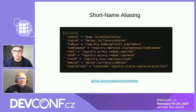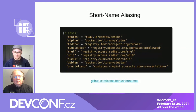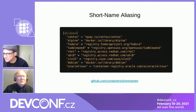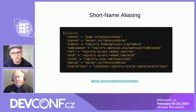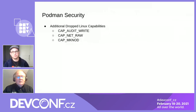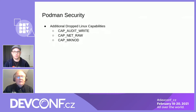We're running short on time, so I'll rush through security features. One thing Docker standardized on many years ago was the default list of Linux capabilities. We feel that several shouldn't be on by default, so with 3.0 we're dropping three capabilities. We have a new feature called containers.conf where you can specify your own default capability list if you want to go back to what Docker originally specified.